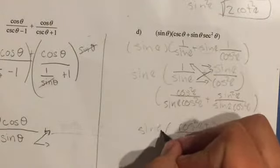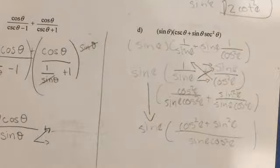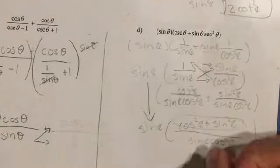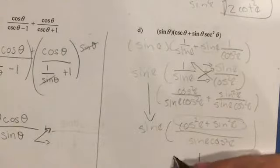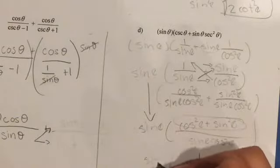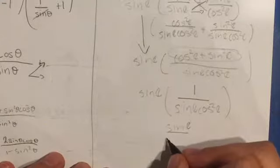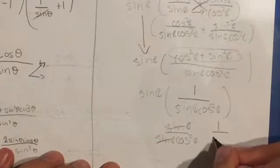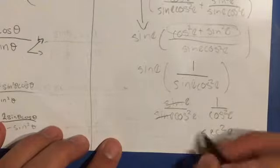And on the outside we still have the sine theta. The next step is simplifying further — cosine squared plus sine squared is equivalent to 1, so we write it as 1 over sine theta cosine squared theta. Now multiply the outside sine theta in: it becomes sine theta over sine theta cosine squared theta. The sines cancel and it becomes 1 over cosine squared theta, which is equivalent to secant squared theta — that will be your final answer.